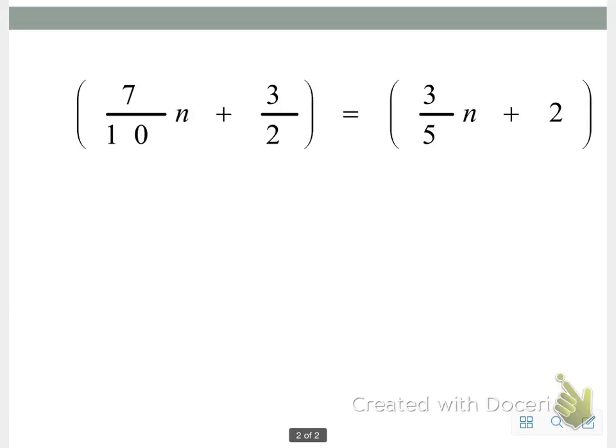We have 7 tenths times n plus 3 halves is equal to 3 fifths n plus 2. As you can see, we have several fractions. We have 7 tenths, 3 halves, and 3 fifths.